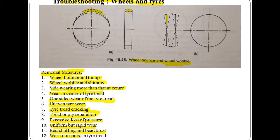The twelfth is worn out spots on tire treads. If faulty wheel bearing is found, replace it. If there is a faulty hub or axle assembly, check and correct. If there is loose steering linkage, check and correct. If there is improper brake adjustment, check and adjust. In these twelve points we can do wheel balancing in a very proper manner, and careful precautions have to be taken while taking remedial actions.